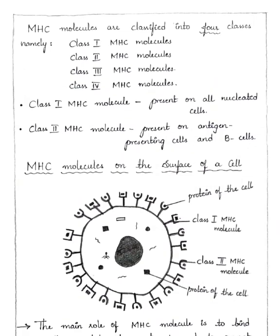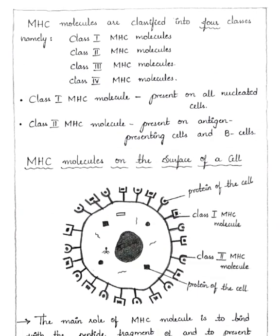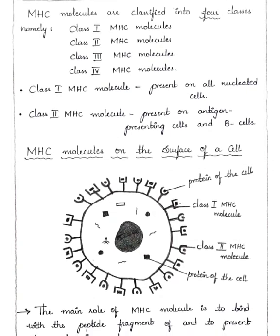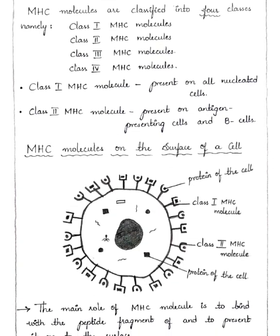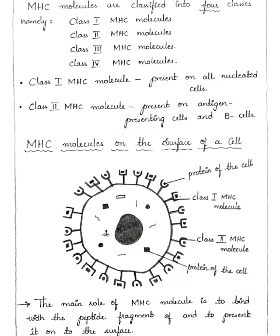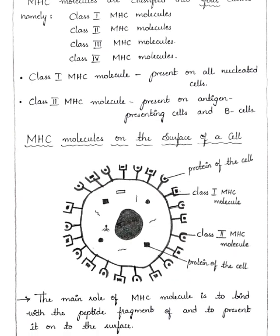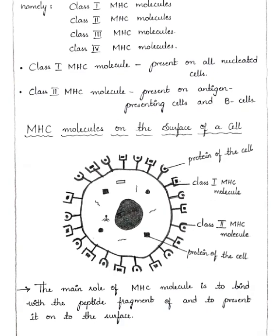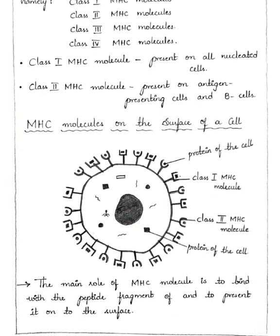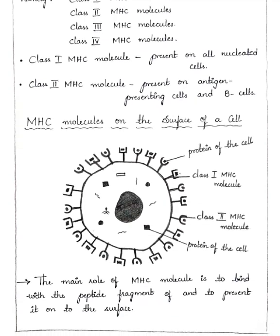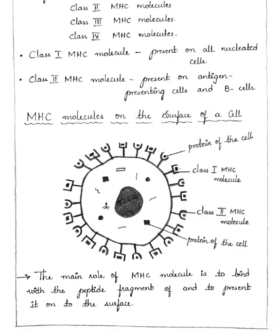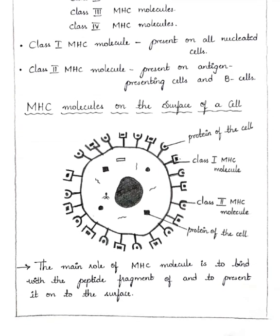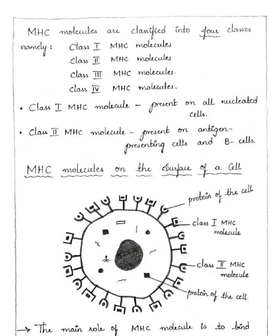MHC molecules are classified into four classes: Class 1 MHC molecules, Class 2 MHC molecules, Class 3 MHC molecules, and Class 4 MHC molecules. Class 1 MHC molecules are present on all nucleated cells, and Class 2 MHC molecules are present on antigen presenting cells and B cells.